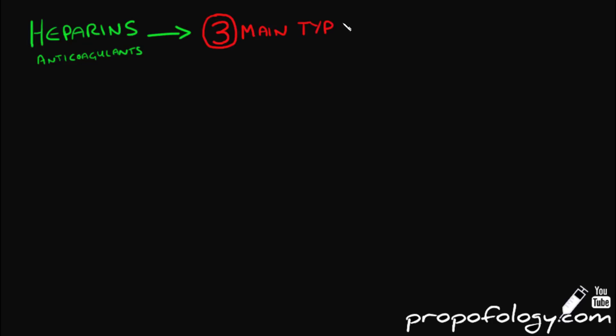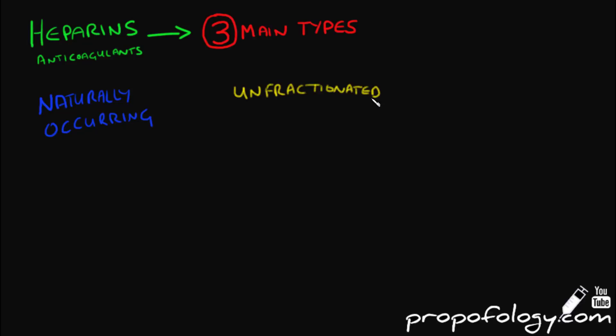Heparins are used extensively in hospitals as anticoagulants for a variety of conditions. There are three main types: naturally occurring heparins, unfractionated heparins, and low molecular weight heparins.